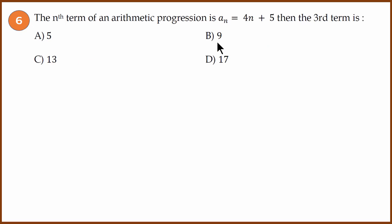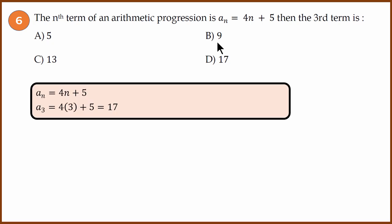Sixth question: Arithmetic progression question. We are given that a_n = 4n + 5. They have asked us to find a_3. a_3 is 4 times 3 plus 5 equals 17. 12 plus 5 is 17. Answer is 17.